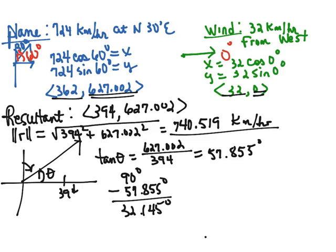So we could say north 32.145 degrees east is the direction that the plane is now flying after the effect of the wind.